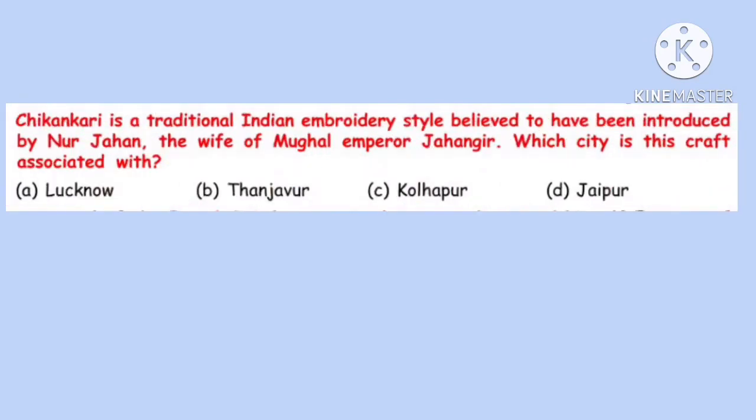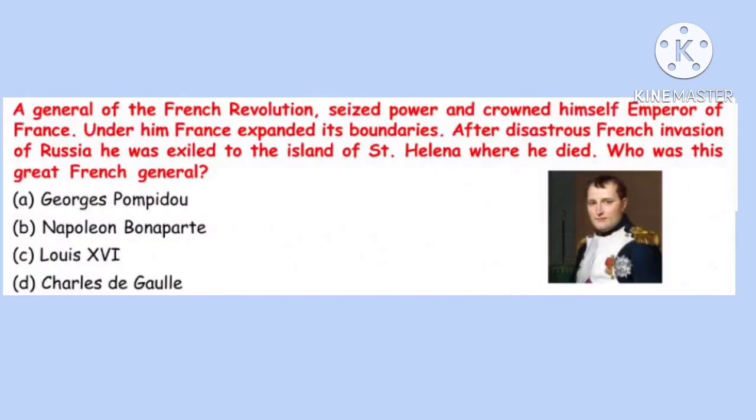Question 14. Chikankari is a traditional Indian embroidery style believed to have been introduced by Nur Jahan, the wife of Mughal emperor Jahangir. Which city is this craft associated with? Correct option is A: Lucknow.